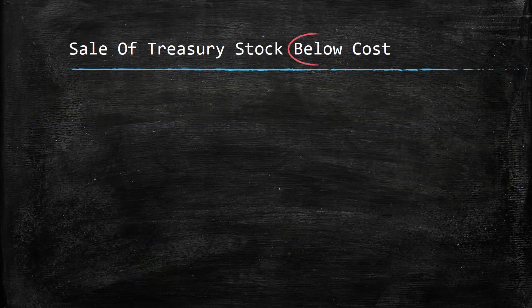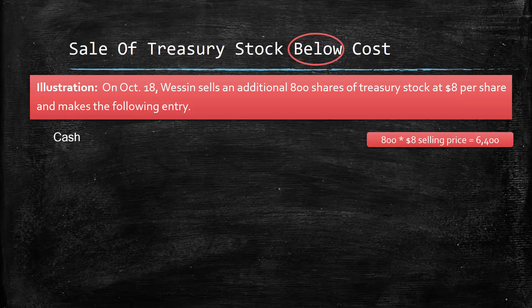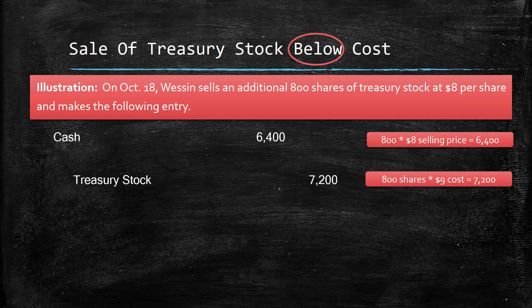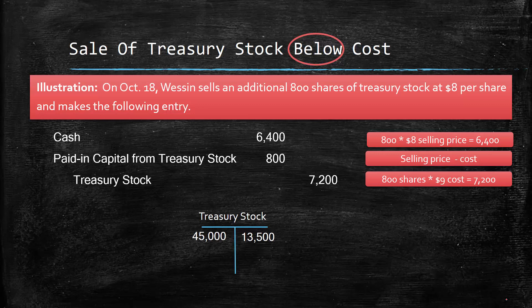Now let's look at the sale below cost. Wesson is going to sell an additional 800 shares of treasury stock at $8 per share. They're selling 800 shares at $8, so they're going to receive $6,400 of cash — we debit cash. Then we credit treasury stock to remove the 800 shares at the original $9 cost. Since we've actually sold them back for less than what they cost us to buy, that results in a decrease, which is a debit to paid-in capital from treasury stock. They had previously created $1,500 in paid-in capital from treasury stock, and now it's being decreased by $800.